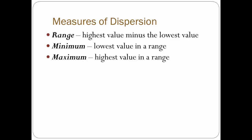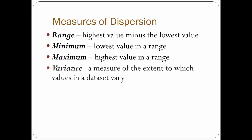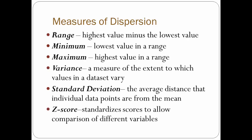The next three measures are interrelated: variance, standard deviation, and z-score. You calculate variance on the way to calculating standard deviation, and you need standard deviation to calculate the z-score. The first two — variance and standard deviation — deal with how the numbers are spread out, or how they vary, in relation to the mean. These statistics relate to the entire dataset.